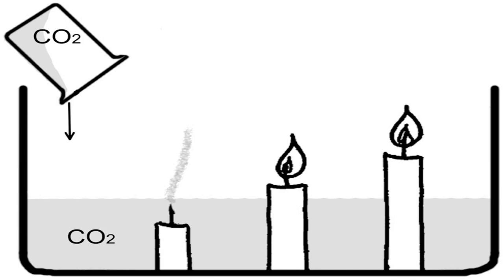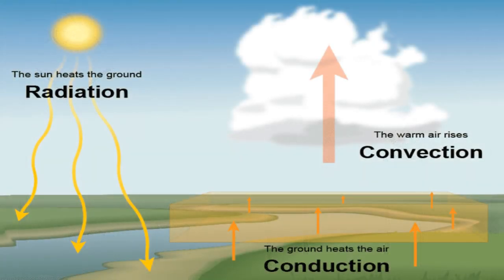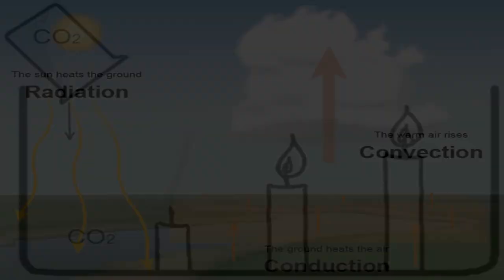CO2 is mixed into the lower atmosphere due to wind, thermics, and all kinds of motions in the atmosphere. But it has the tendency to stick to the surface — to the first few hundred meters in the atmosphere.